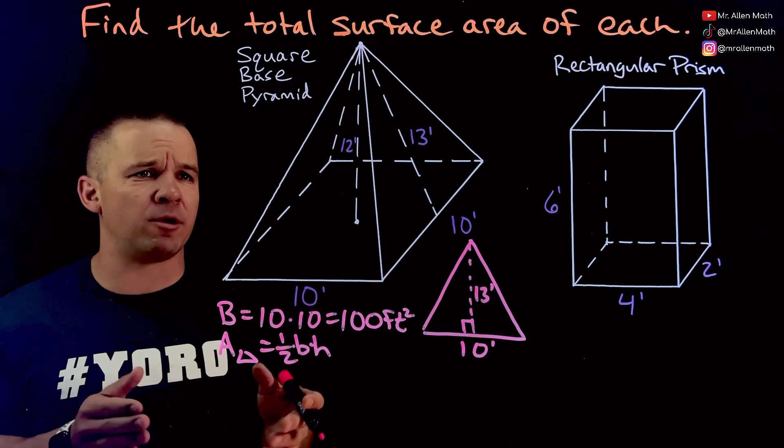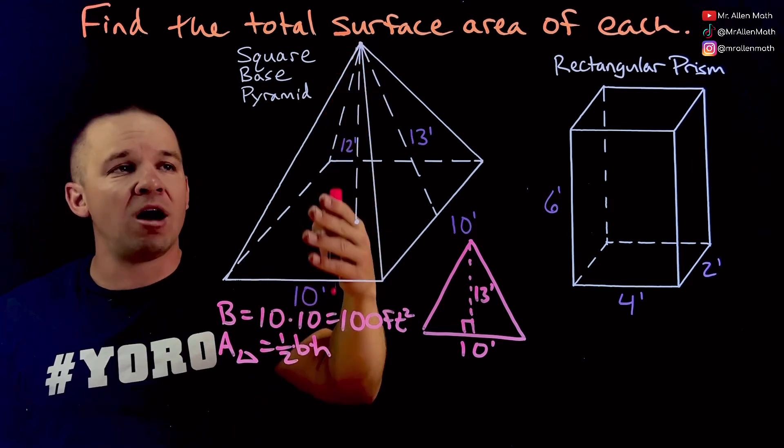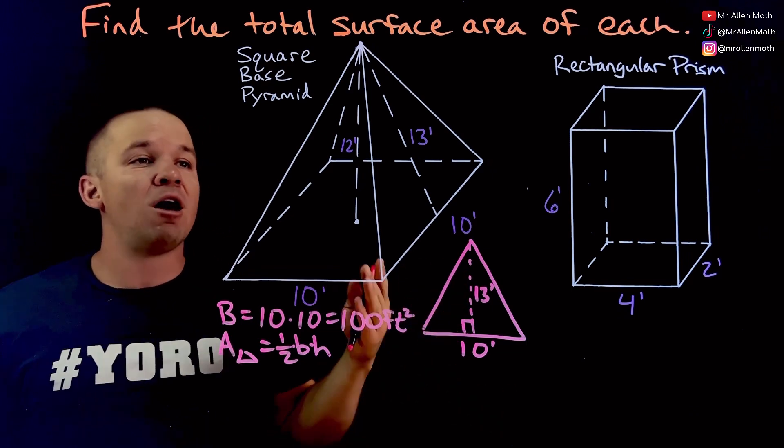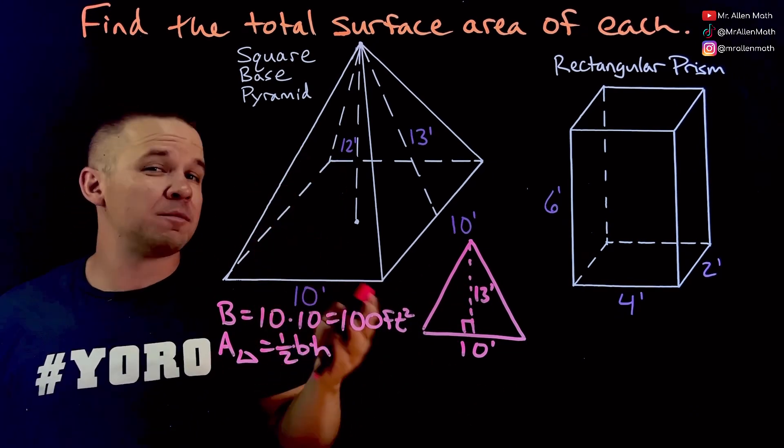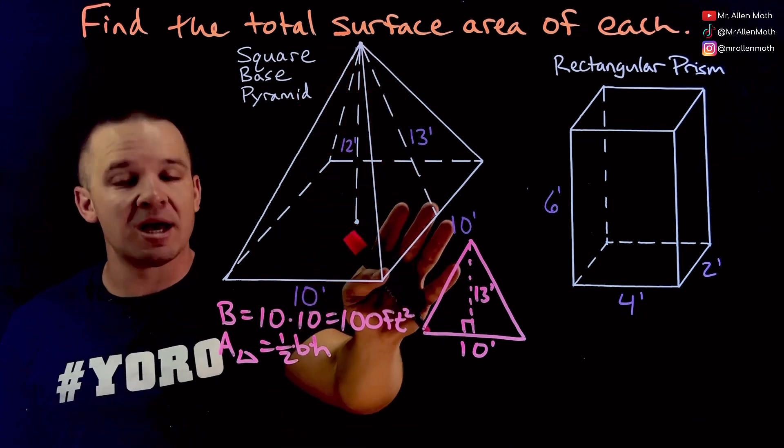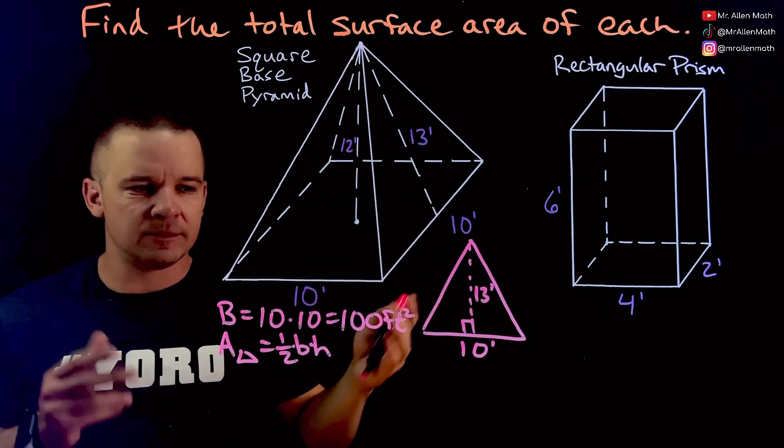So what's that 12 you might be wondering? Well that's the height of the pyramid itself, whereas the 13 that's the slant height of the pyramid, it's the height on the face of it. The 12 comes into play when we talk about volume but we're talking about surface area so we're using the dimensions that are on the surface of this figure.